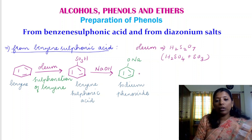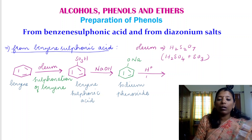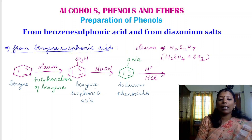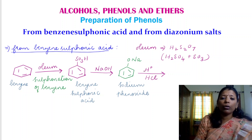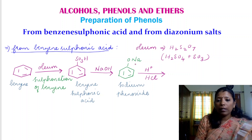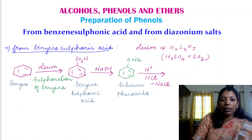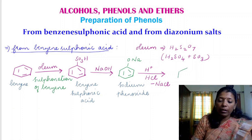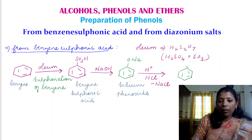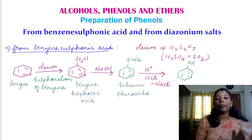This sodium phenoxide on further acidification — that is, when we treat sodium phenoxide with an acid such as hydrochloric acid — the Na and Cl are removed as NaCl, and hydrogen gets attached to the oxygen. Thereby we get phenol as the main product. This is how we prepare phenol from benzene sulfonic acid.